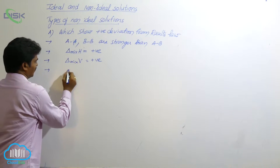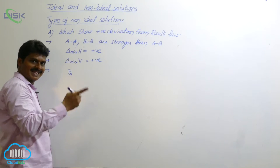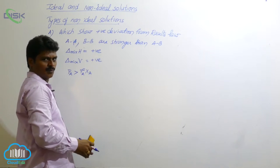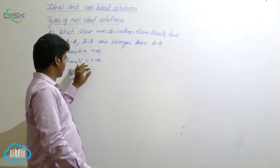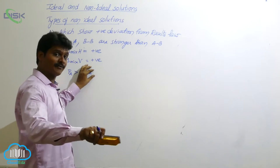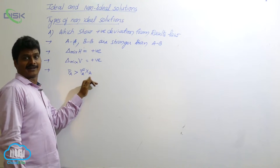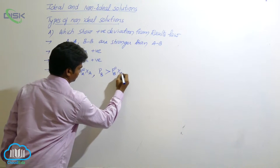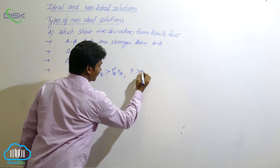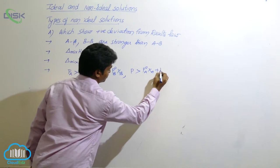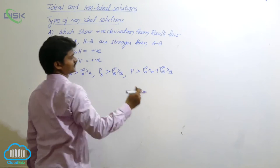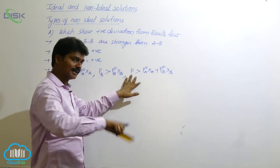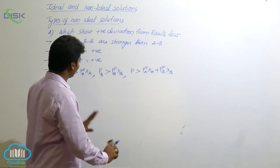Similarly, the vapor pressure of component A in the solution is greater than expected from Raoult's law: PA is greater than P°A · xA. Similarly, PB is greater than P°B · xB, and P_total is also greater than P°A · xA + P°B · xB. So all pressures — PA, PB, and P_total — are more than expected from Raoult's law.